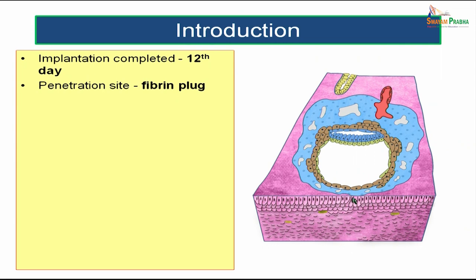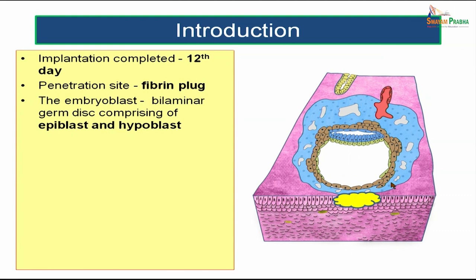Once the developing zygote is completely within the endometrium, we say implantation is completed, which happens roughly around the 12th day after fertilization. The penetration site when implantation is completed is plugged with a fibrin plug, closing that defect. Now the developing zygote is entirely within the endometrial wall. When we have a closer look, the inner cell mass is redefined as embryoblast, which becomes bilaminar — having two layers — forming the bilaminar germ disc during the second week of intrauterine period.